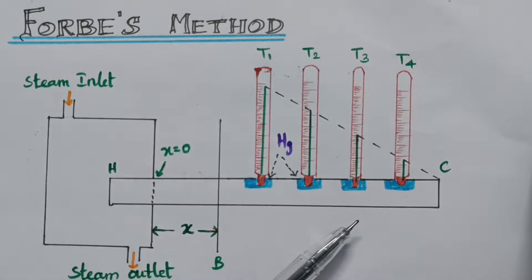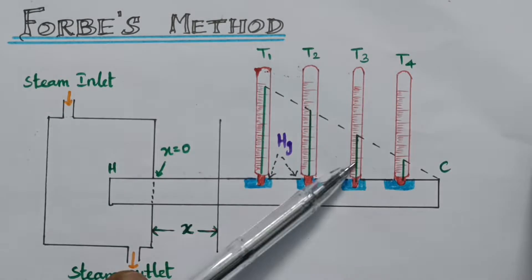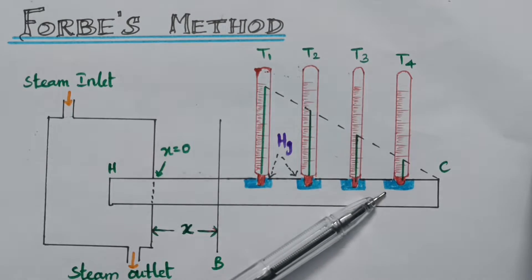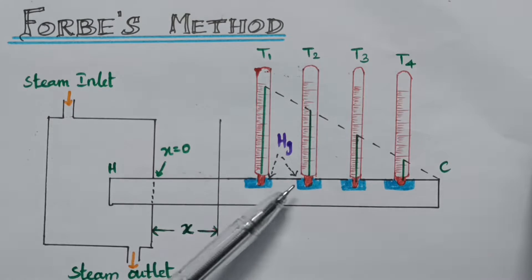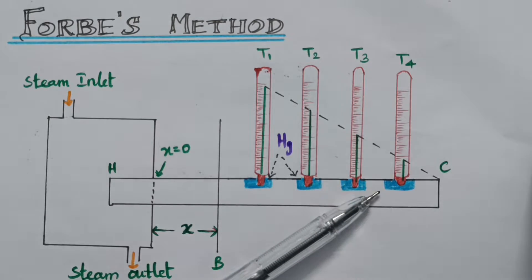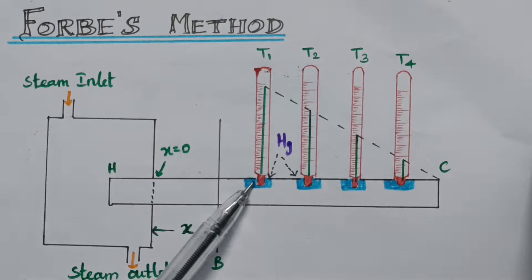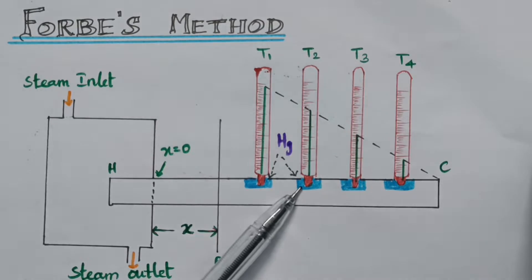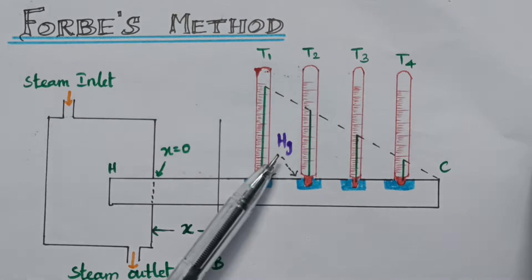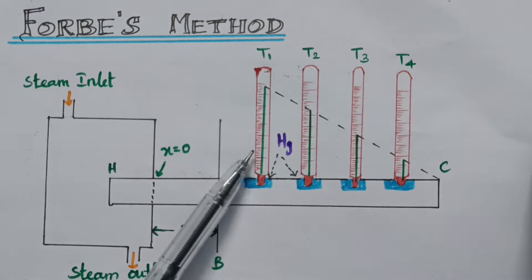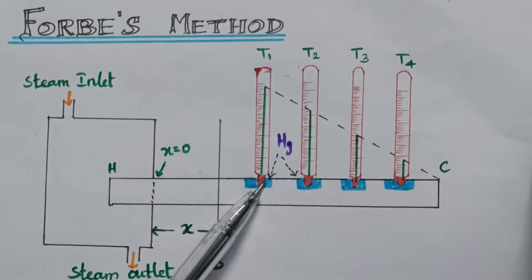The other end is free. There are 4 provisions — 4 holes — made in the rod where we fix the thermometers T1, T2, T3, and T4 at equal distances. We fix mercury powder in these holes because mercury is a good thermal conductor, which ensures good thermal contact between the rod and the thermometers.